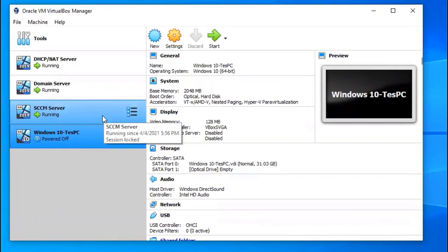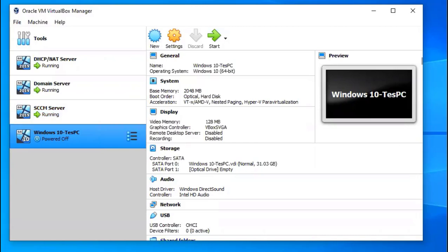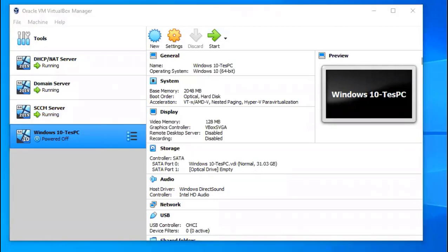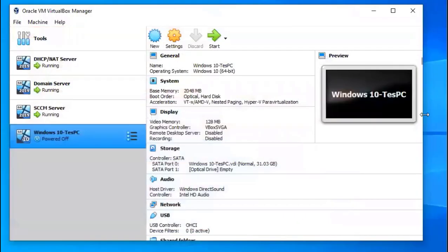I'm going to start this Windows 10 machine that I created but haven't done anything with yet. I'll use the IP scheme I mentioned for my lab setup, giving this machine an IP address of 192.168.1.4 with a subnet mask of 255.255.255.0, so we can connect it to our network and then add it to our domain.